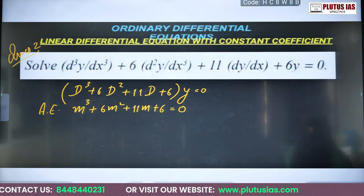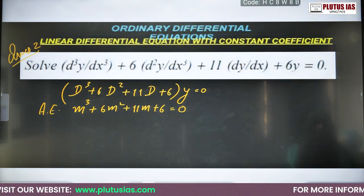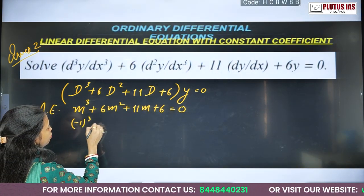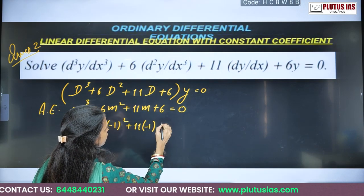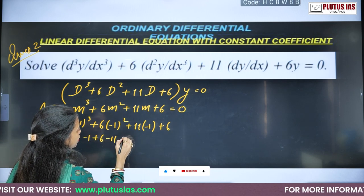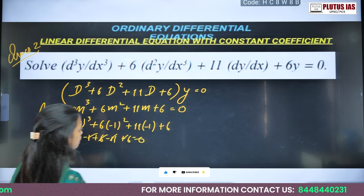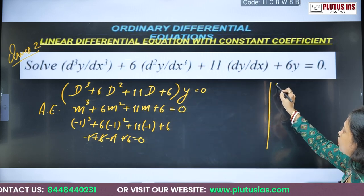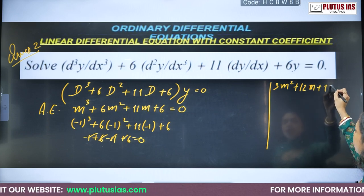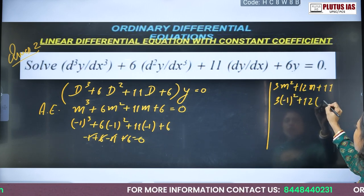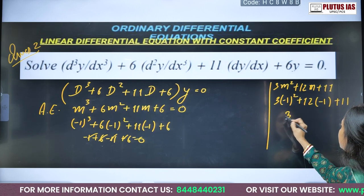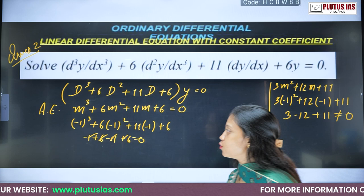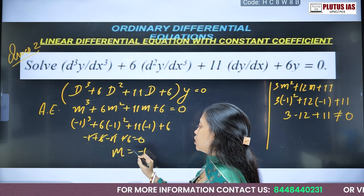Try a negative number — try minus 1. Substituting: (−1)³ plus 6(−1)² plus 11(−1) plus 6 gives minus 1 plus 6 minus 11 plus 6 equals 0. Now check for repeated root by differentiating: 3m² plus 12m plus 11. Substituting minus 1: 3 minus 12 plus 11 equals 2 — not 0. So minus 1 is not a repeated root. We have one root m equals minus 1, and for a cubic, once you get one root the rest becomes a quadratic — easy to solve.